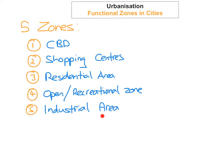The fifth zone is the industrial area, where you'll find lots of light industry. Footloose industry usually locates in these industrial parks, which are found on the suburbs of the city. The reason for this is because they need such a large space, and land is much cheaper on the suburbs than it is right in the heart of the city centre. There's also less traffic around the suburbs, and it's easier to obtain planning permission there.